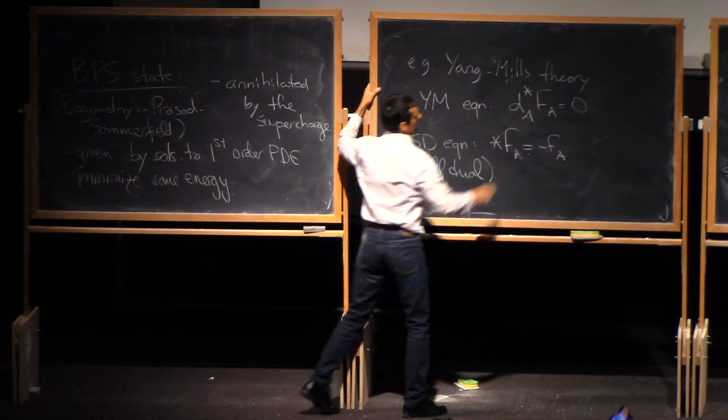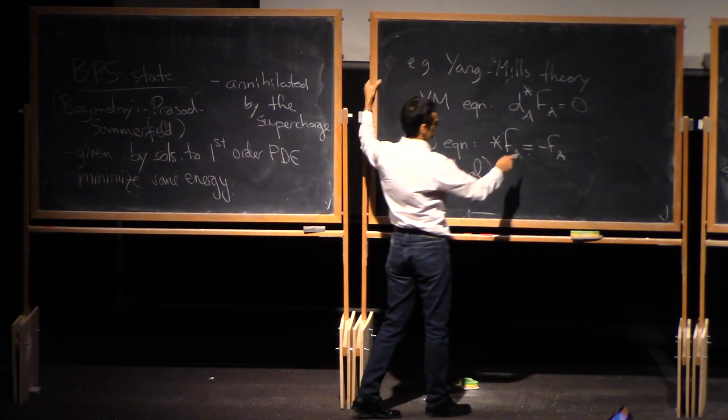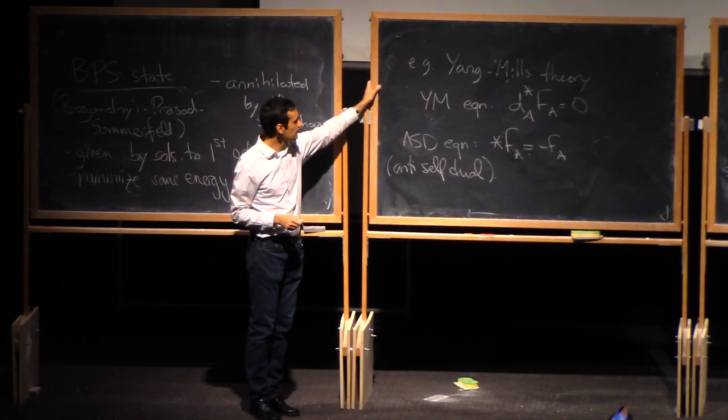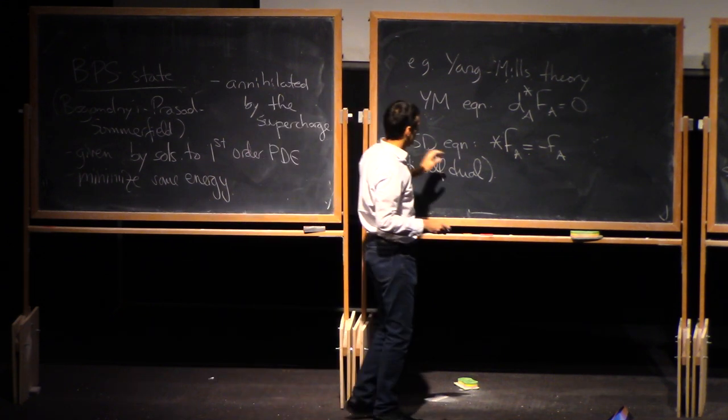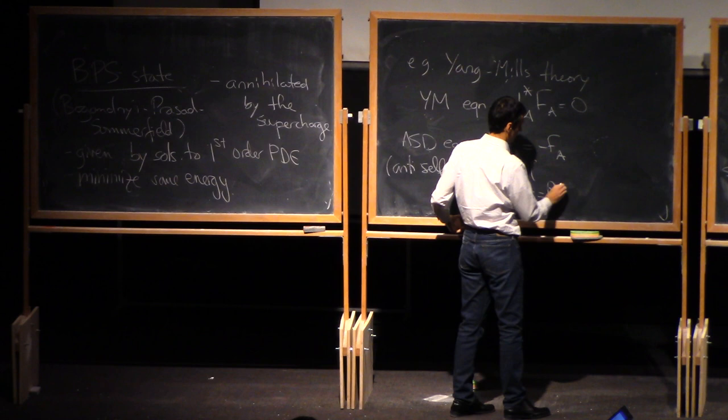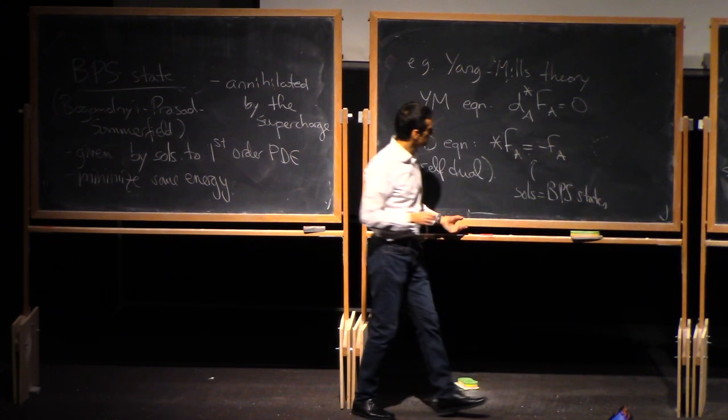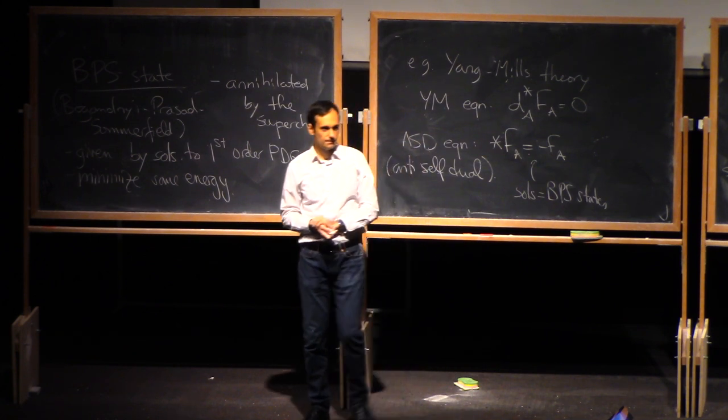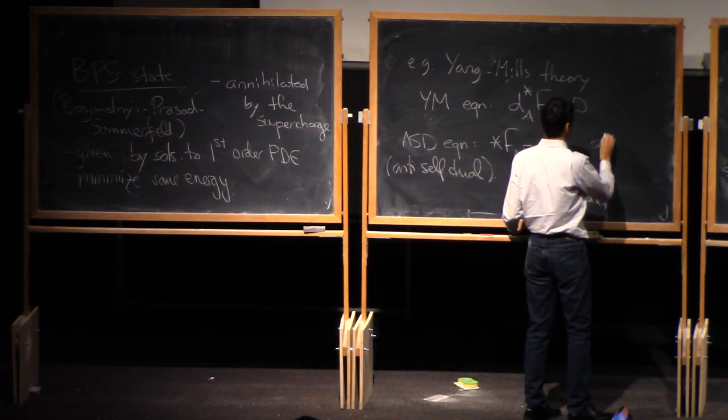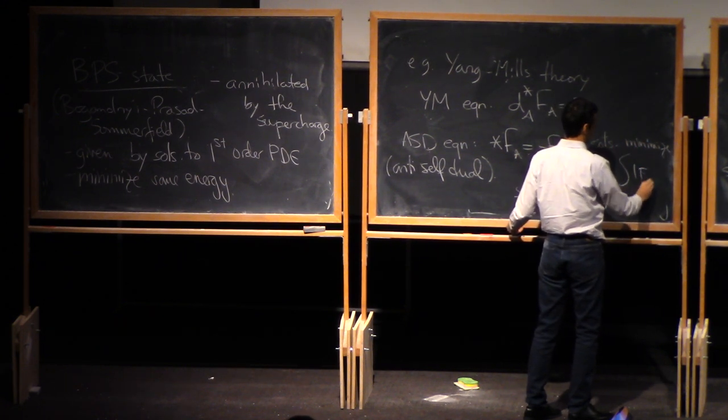Sorry, dA. Yes, dA of FA is zero, so if you apply dA to this, then you get that dA star of FA equals zero.